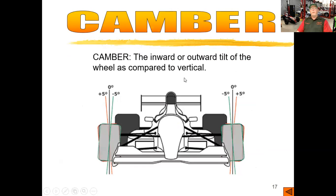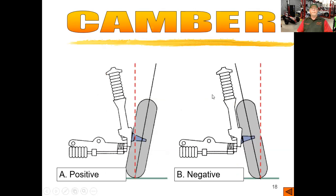Camber is the inward or outward tilt of the wheel as compared to vertical, so vertical will be straight up and down. If the tire is straight up and down through the center line of the vehicle, it's zero degrees camber. If the top of the wheel is pointed out, it's positive camber. If the top of the wheel is pointed in, it's negative camber. Same thing on the opposite side — if they're tilted out, it's positive camber; if they're tilted in, it's negative camber. That can also apply to rear wheels as well. Here's another picture that shows the top of the wheel pointing out, which is positive camber, and this one shows the top of the wheel pointing in, which is negative camber.